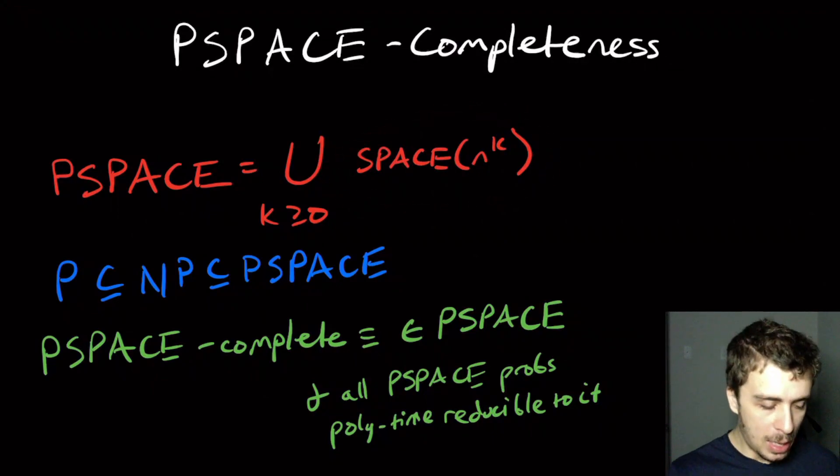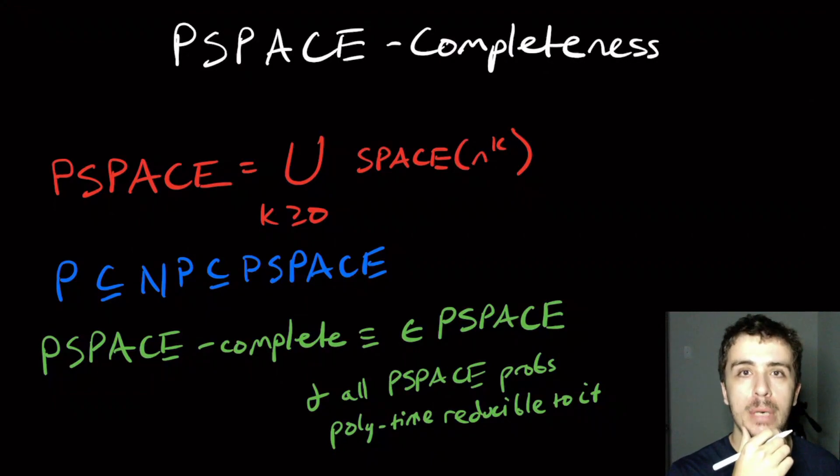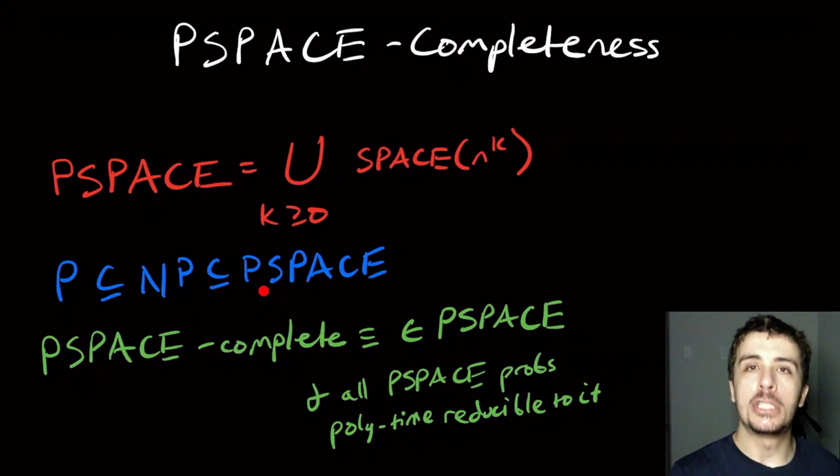One thing that we can prove pretty quickly is that P is a subset of NP, we've already known that, but NP is actually a subset of PSPACE. So any problem that can be done in nondeterministic polynomial time can be solved with a polynomial amount of space.